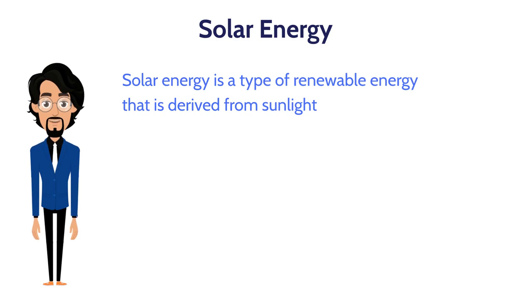A solar panel works by allowing photons, or particles of light, to knock electrons free from atoms, generating a flow of electricity. Photovoltaic cells convert the energy in sunlight into electricity — specifically direct current (DC). This DC electricity is then converted to alternating current (AC) by an inverter.